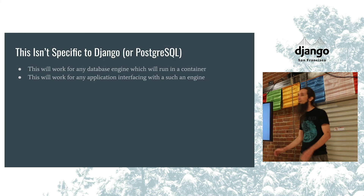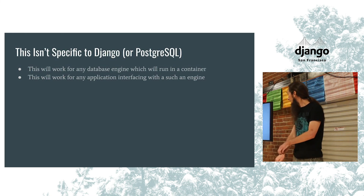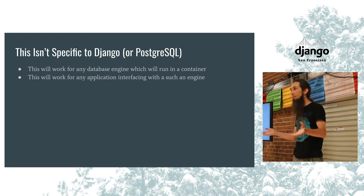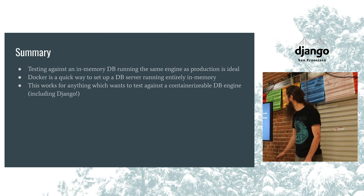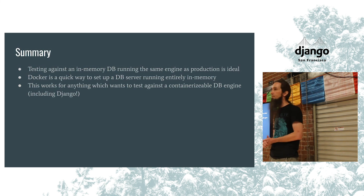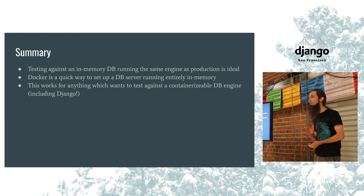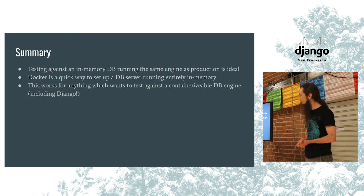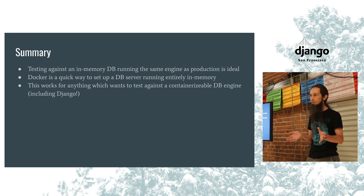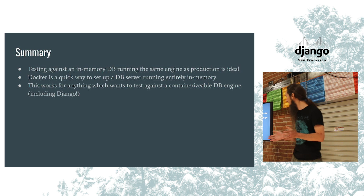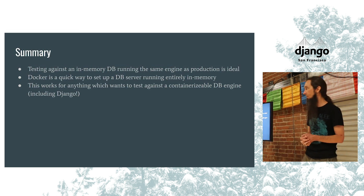The other nice thing about this is that it is not specific to Django or Postgres. It'll work for any database that runs in a container, and therefore it'll work for any application that wants a database that can run in a container — you just point it at your Docker container. In summary, our ideal situation for testing is to have an in-memory database using the same database engine as production. Docker is a very quick way to set up most major database engines running totally in memory, and this works anytime you want to test against a containerizable database engine, including Django and Postgres.